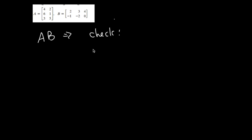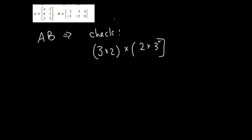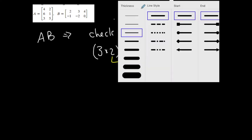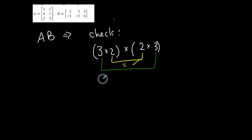Let me do this check and see if I can do it. Matrix A is a three by two matrix — it has three rows and two columns. Matrix B is a two by three matrix. So I want to make sure that my requirements are met. The two middle numbers have to be equal, and they are. The number of columns in the first matrix matches the number of rows in the second. The dimension of my product is going to be a three by three — this many rows and this many columns.